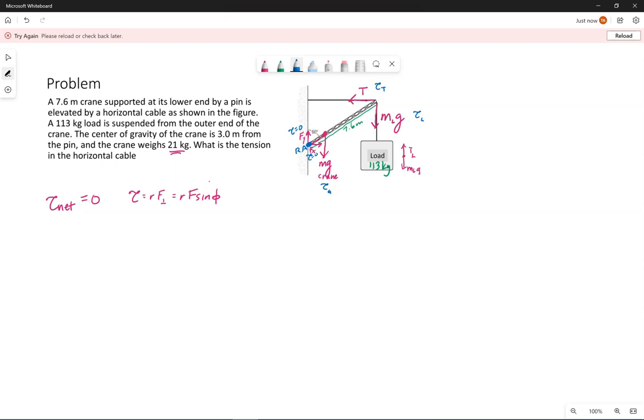But those torques need to add to zero. So let's see. In terms of the torques, we have the torque due to the tension force rotating, or that would rotate counterclockwise. That needs to balance out the torque due to gravity on the crane, because that would tend to rotate clockwise, as well as the torque due to the load, because that also would rotate the crane clockwise. So we're balancing these out to make sure that the net torque is zero.